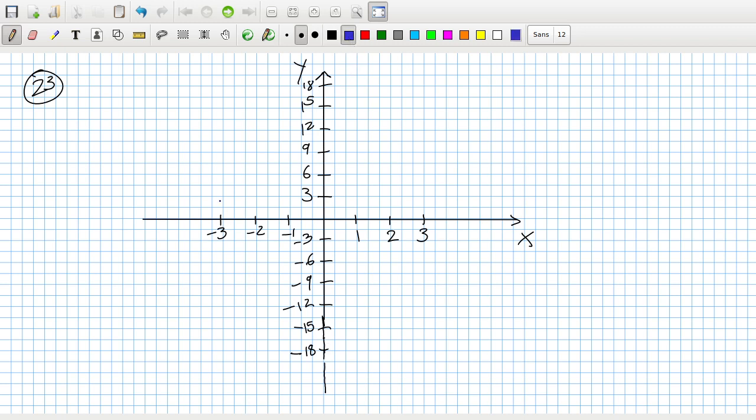Okay, so the first point is minus three, 15. Then minus two, 12. And then minus one, nine. And then zero. Oh, minuses. Minus three, minus 15. Minus two, minus 12. Minus one, minus nine. Zero minus, zero minus six. One minus three. Two, zero. Three, three. Looks like we got a nice straight line.